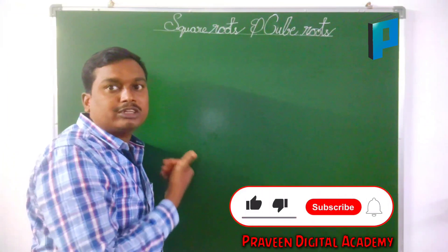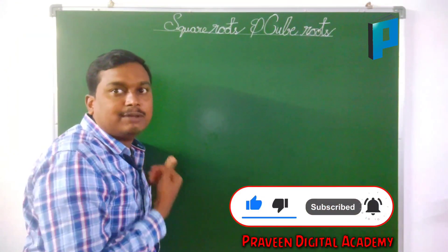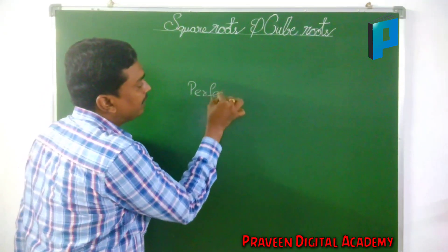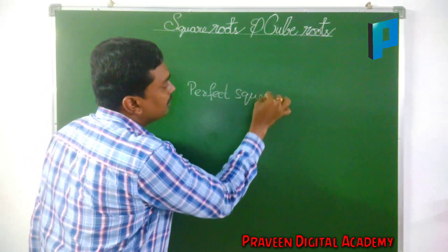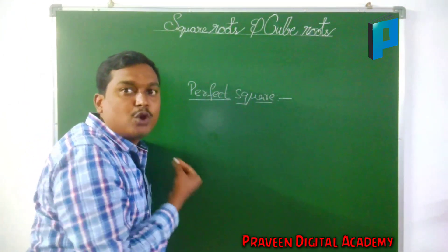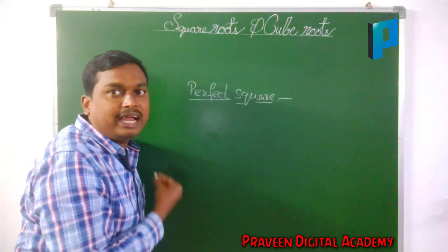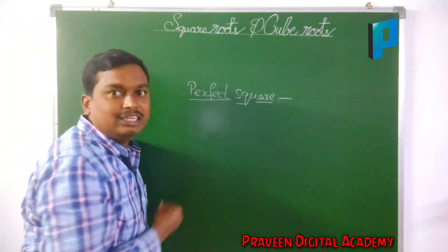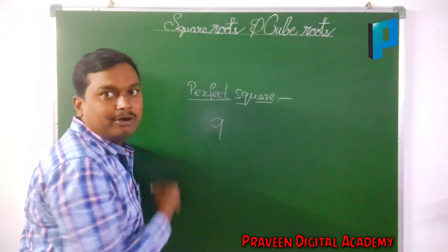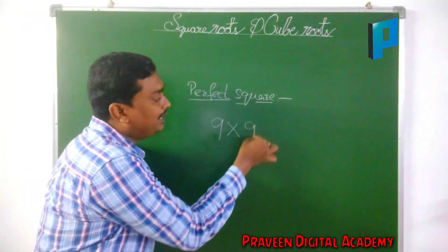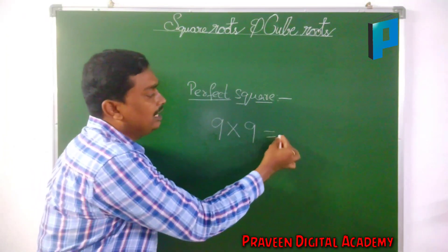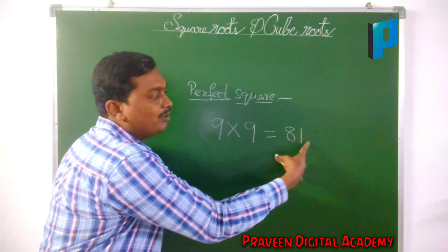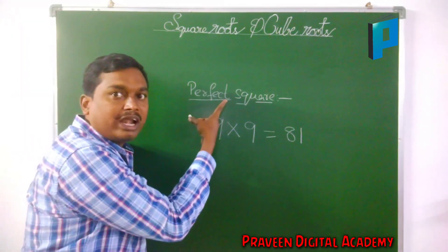Before going to square roots and cube roots, let us know what is a perfect square and what is a perfect cube. A perfect square means if you are having any number multiplied two times, then whatever result we get, that we say it as a perfect square. For example, if we are having the number 9, this number multiplied two times — 9 into 9 — whatever the solution we get, that solution we say it as a perfect square.